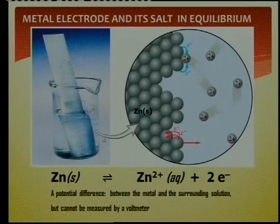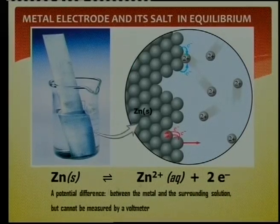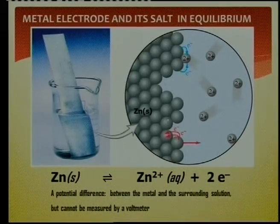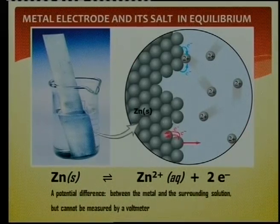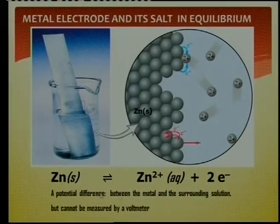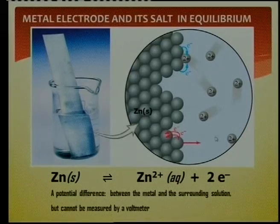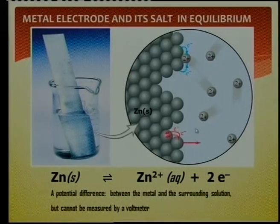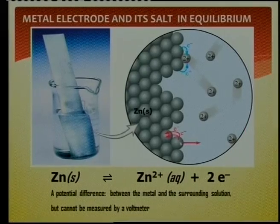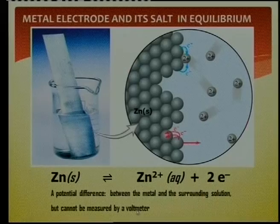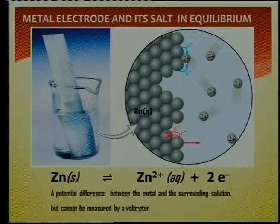Because there's no other half cell connected to this, we say the zinc solid is in equilibrium with its solution — electrons move forward and backwards all the time. There is a difference in potential, but it cannot be measured by a voltmeter, because a voltmeter only measures differences in potential between two points.